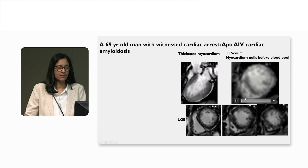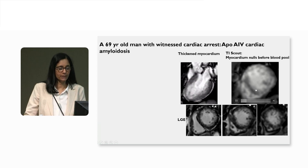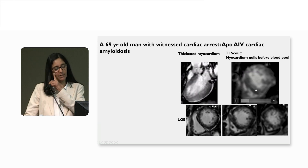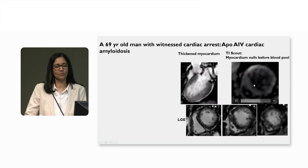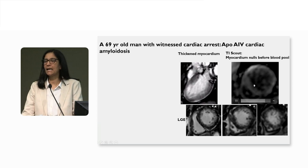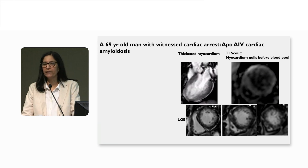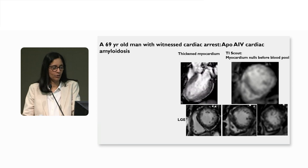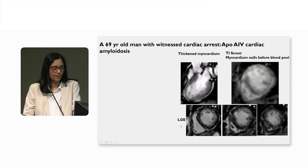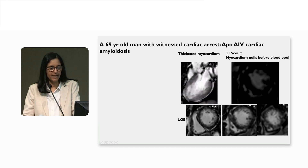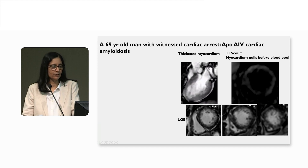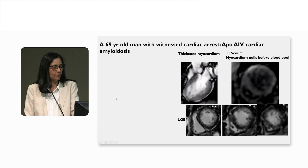On the T1 scout and the inversion time recovery scout, you can see that the myocardium nulls first and then the blood pool nulls — a classic finding in cardiac amyloidosis. On late gadolinium enhancement, you can see this patchy mid-myocardial enhancement, but not too much of a transmural uptake.